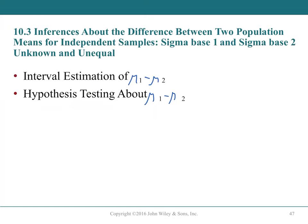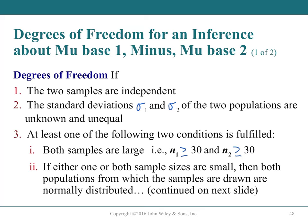Transitioning to section 10.3: the population standard deviations are unknown. Since there is no reason to assume they are equal, we safely assume unequal standard deviations. This eliminates section 10.2 (which covers equal variances) and gives us a more generally useful procedure.